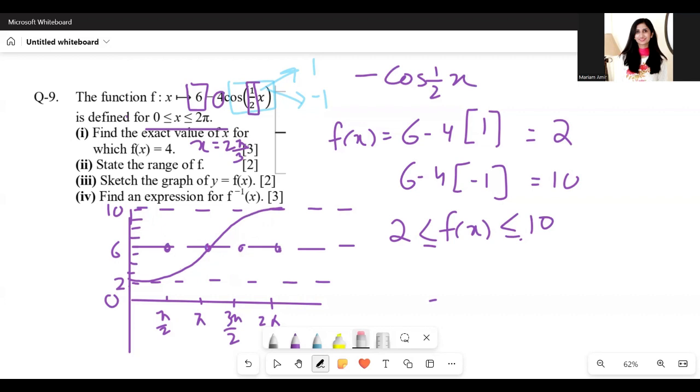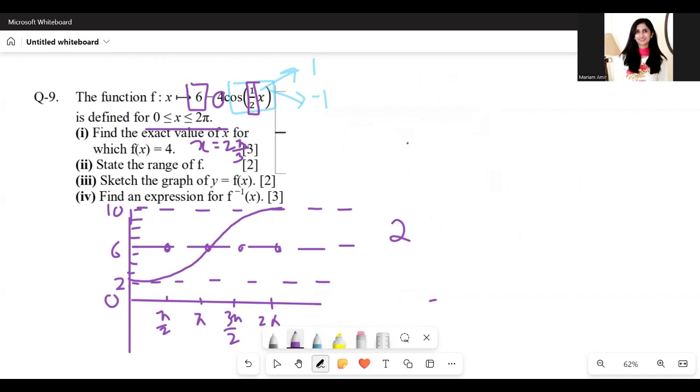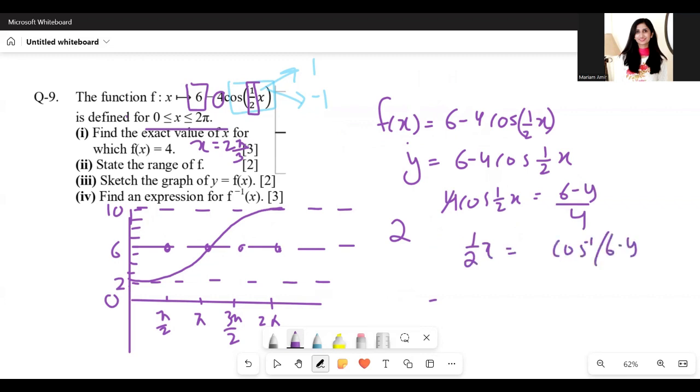Part 4 says find an expression for f inverse of x. So let's write f(x) equals 6 minus 4 cos half x. I'm going to replace this with y. Make x the subject. So 4 cos half x comes here, 6 minus y. 4 gets divided. Cos inverse. 2 multiplies. So we get f inverse of x equals 2 cos inverse of 6 minus x upon 4, which is the final answer.